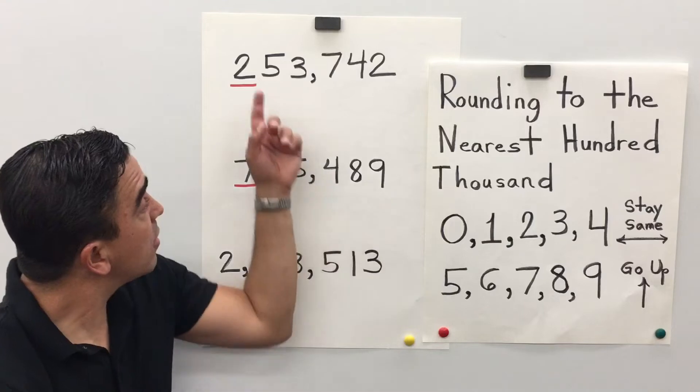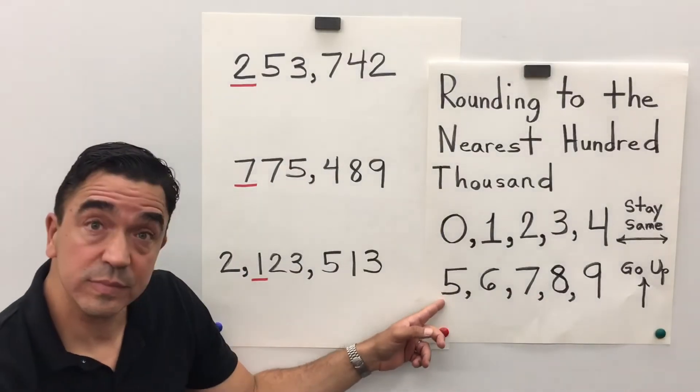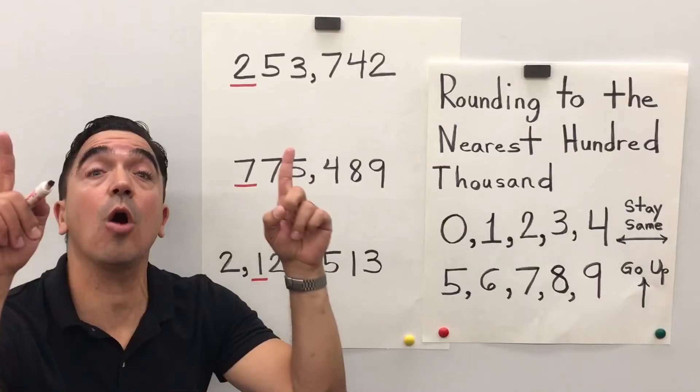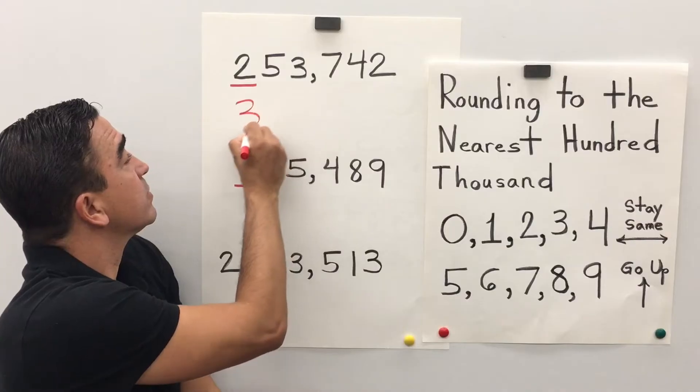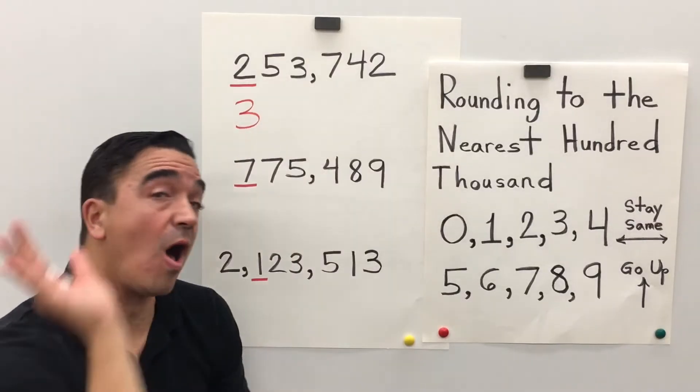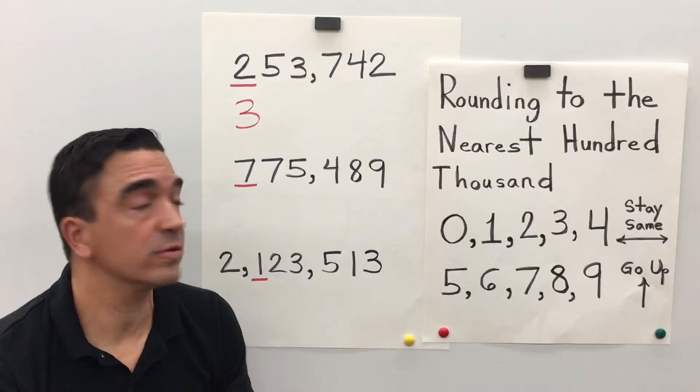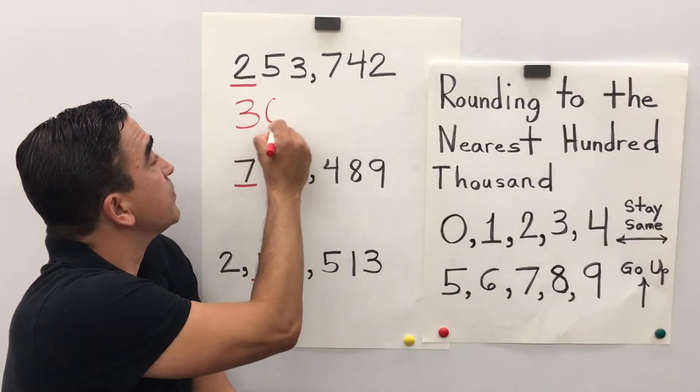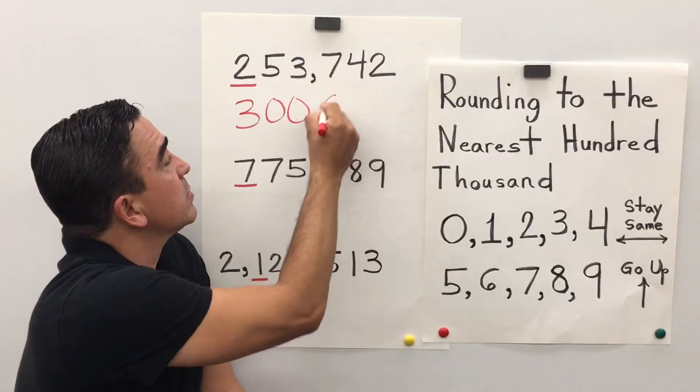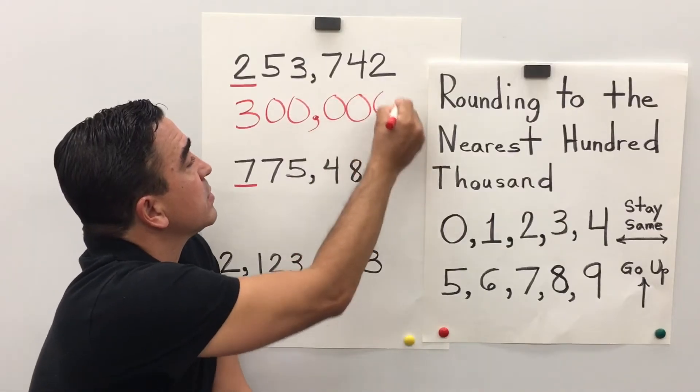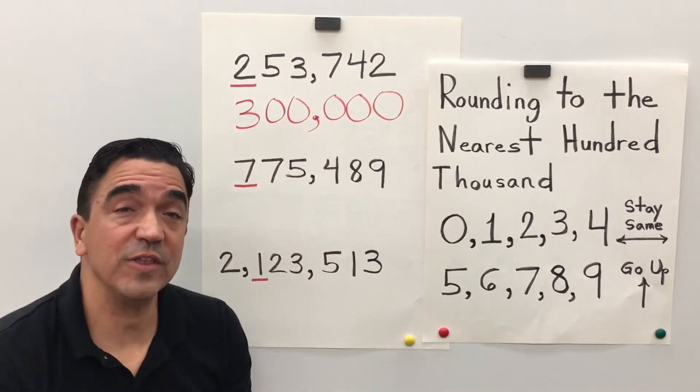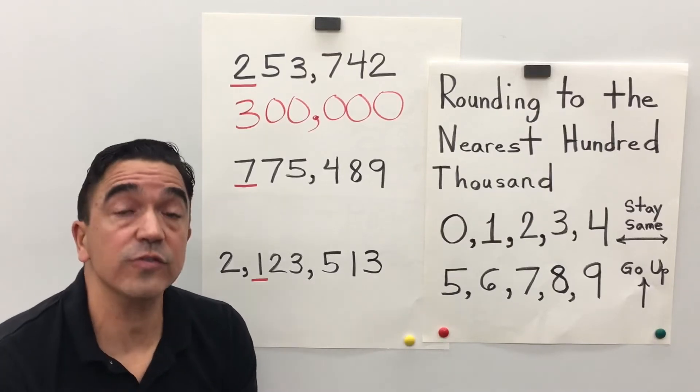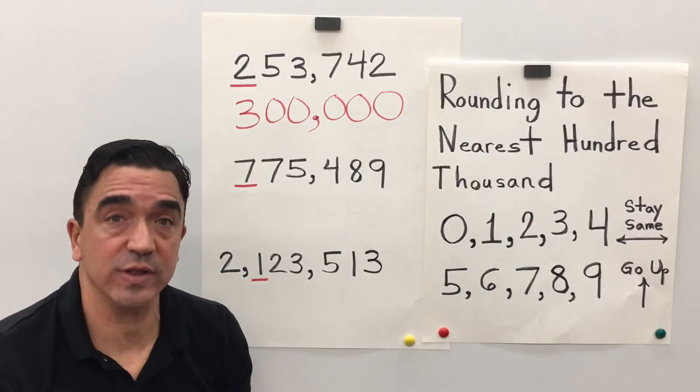Alright, so the 5 is going to tell the 2 to go up. All the digits after become zeros. And there's 1, 2, 3, 4, 5 digits. So, 253,742 rounded to the nearest hundred thousandth is 300,000.